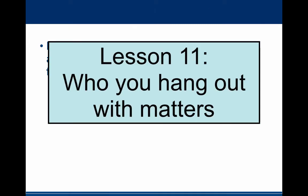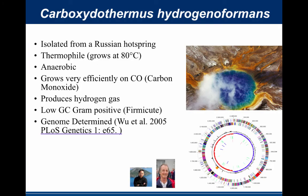This method analyzes who the genes hang out with. It was originally developed by Pellegrini and Eisenberg at UCLA and it's called phylogenetic profiling. We sequenced this genome at TIGR — a really interesting thermophilic organism related to spore-forming clostridia and Bacillus anthracis, producing hydrogen as a byproduct of its metabolism. That's why it was being studied and funded by the Department of Energy, though they didn't really care about its relationship to anthrax.